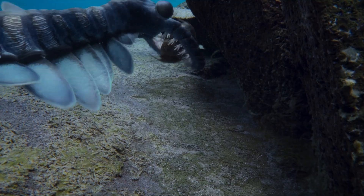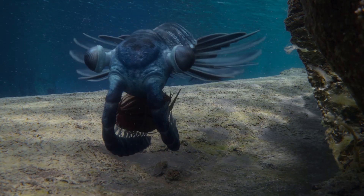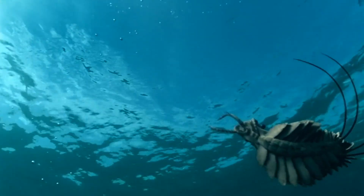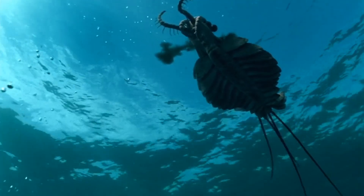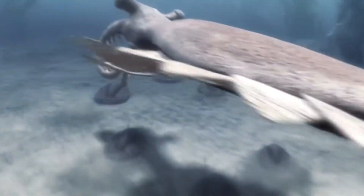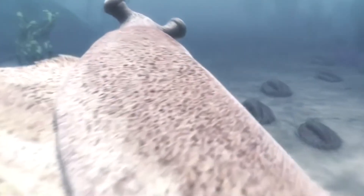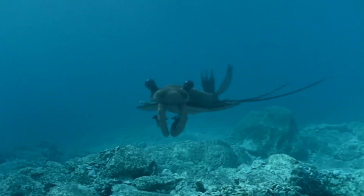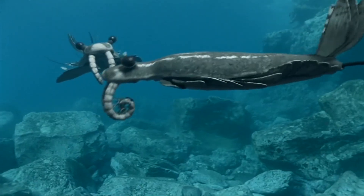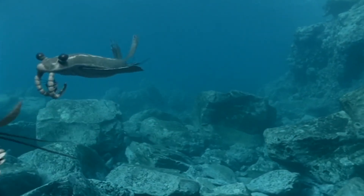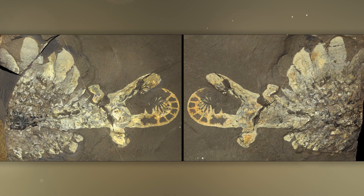Trilobites were most likely the main food of Anomalocaris, although it could also eat its smaller relatives. All these adaptations and large size made Anomalocaris the most formidable predator of its time. Judging by the remains found, these creatures lived almost all over the globe. Currently only two species have been described, but there are suggestions that there were at least ten — not all available remains have been fully studied yet.